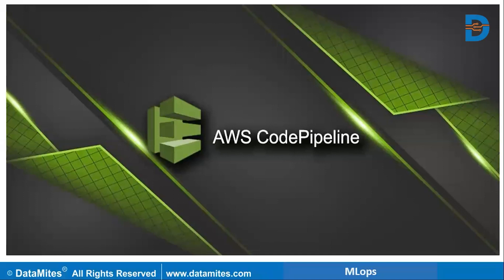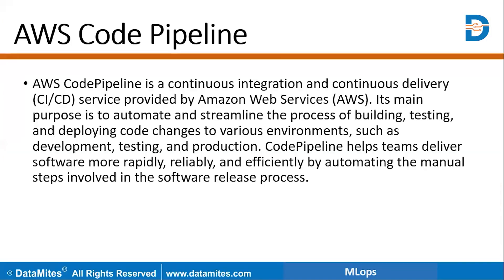Hi everyone, in this video we are going to see about AWS CodePipeline. AWS CodePipeline is the continuous integration and continuous delivery CI/CD service provided by Amazon Web Services. And what does continuous integration and continuous delivery mean?